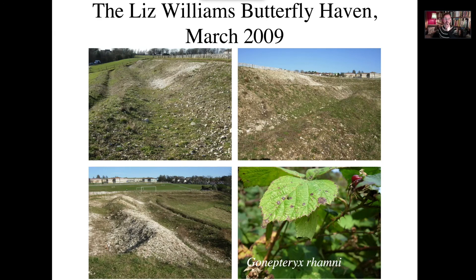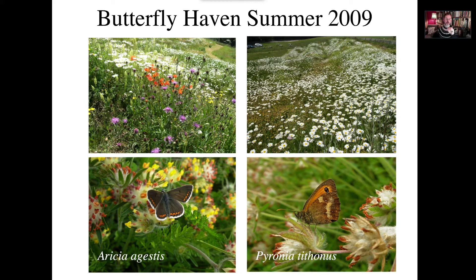I'm conscious I'm probably speaking to an audience frequently working with tropical biodiversity — to them this must look like a green desert. But from a northern hemisphere point of view, this looks really good habitat for lycaenid butterflies restricted to chalk and limestone soils. In summer 2009 there were still lots of wildflowers — quite dense — we need a little more space, but we were getting new species like the brown argus and the hedge brown coming in.